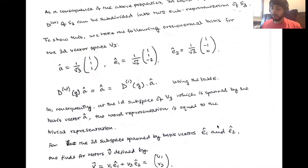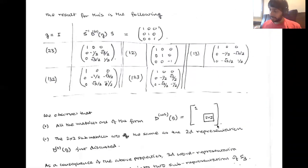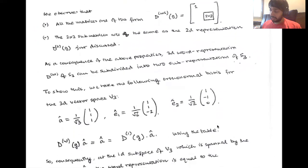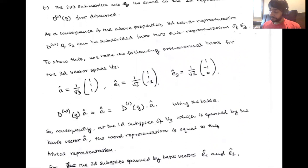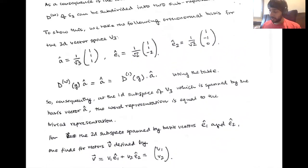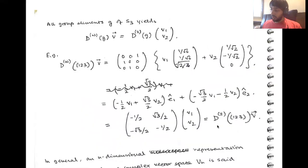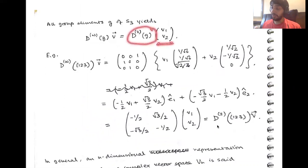For this you can just use this table I've shown you to cross-check. Now we have this two-dimensional subspace spanned by the vectors E1 and E2. One can define vectors V1·E1 + V2·E2, giving you components (V1, V2). If you do this for all elements of S3, what you will find is that D-W acting on V is equivalent to D2 acting on (V1, V2).